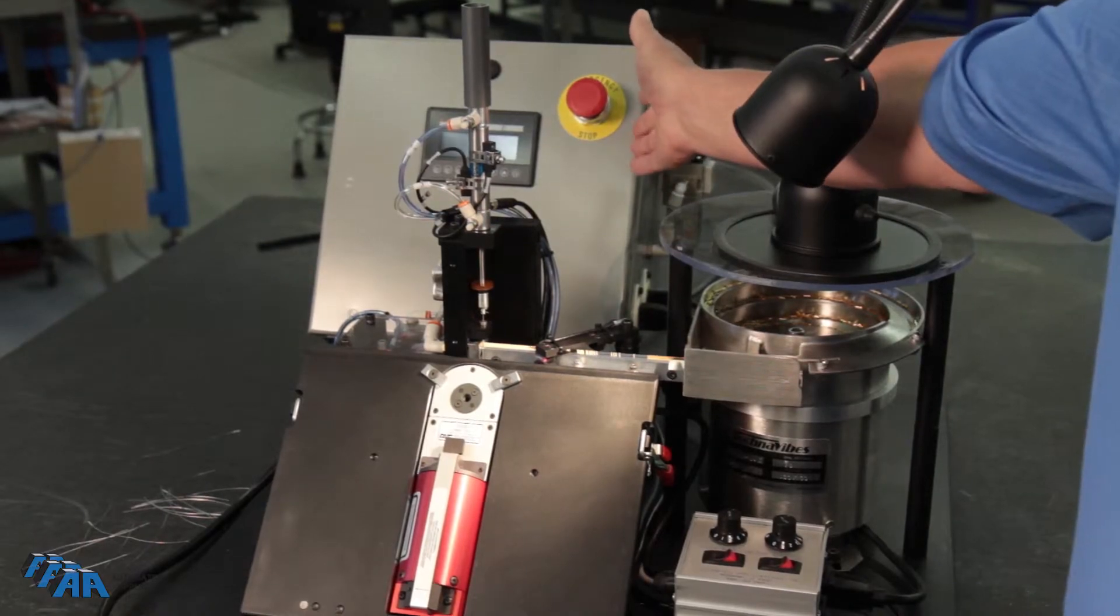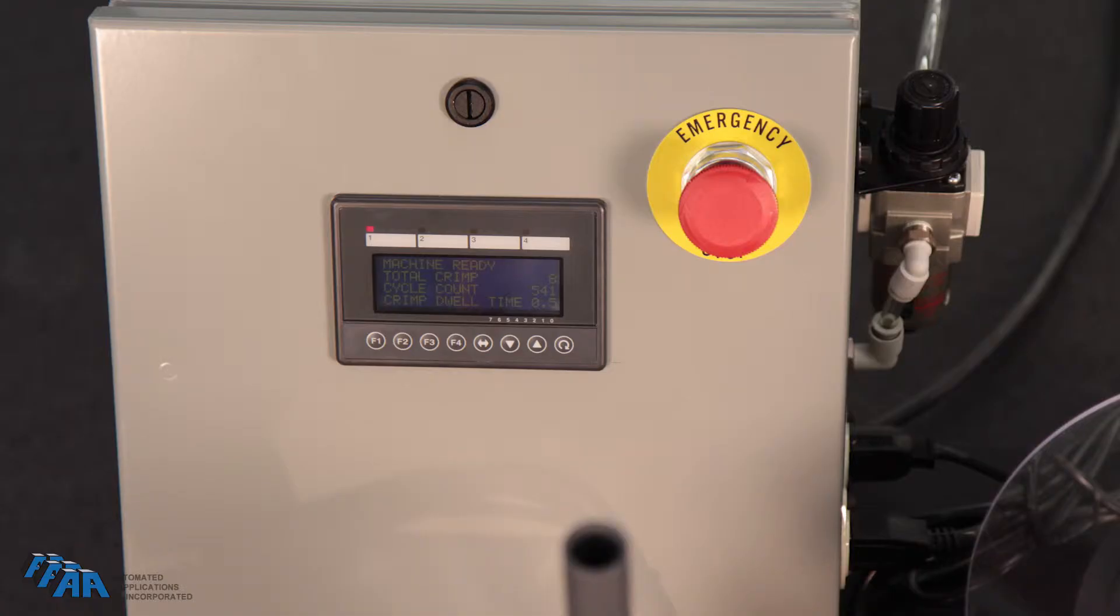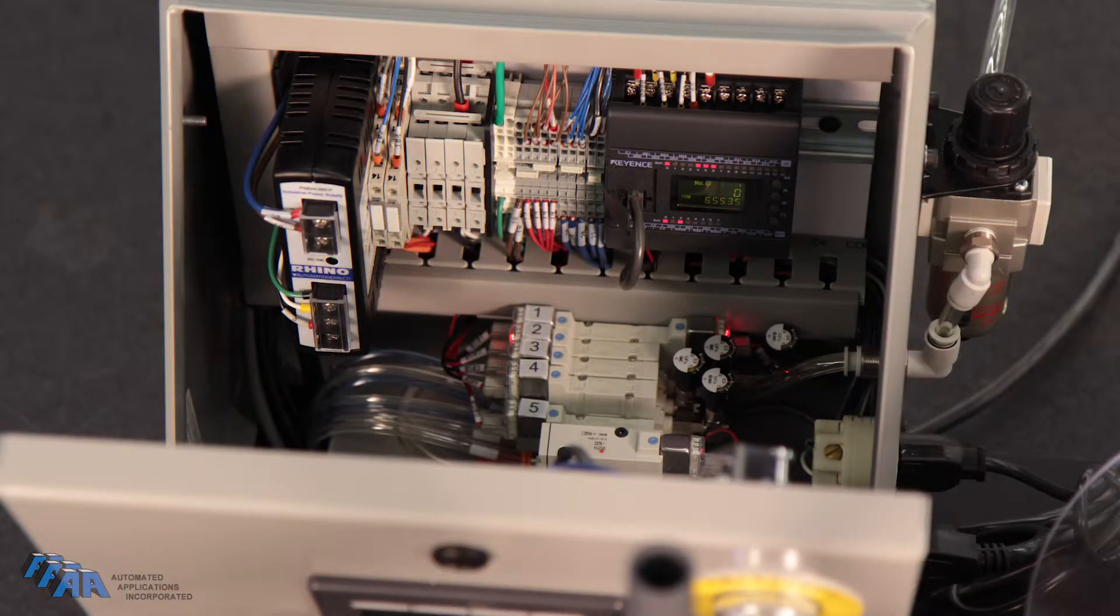Back here is the electronics for the machine. We have an operator interface panel that lets you know the condition of the machine and what fault might be present or not. It also counts the amount of contacts that you've crimped.